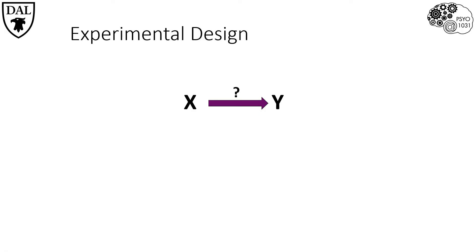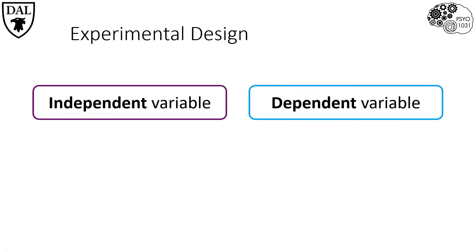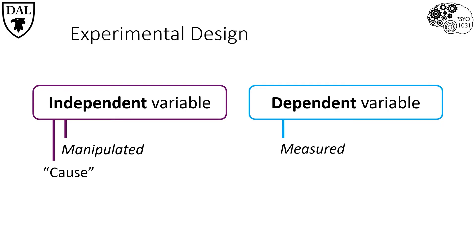An experimental research design has two types of variables: an independent variable and a dependent variable. The independent variable is the one that's manipulated, and is the proposed cause in the research question. Going back to the example of whether sugar causes hyperactivity in children, this would be sugar. The dependent variable is the one that's measured, and it's the proposed effect in the research question. Back to our question on whether sugar causes hyperactivity in children, this would be activity levels. Although an experiment can have many independent and dependent variables, the most basic experimental design has to have at least one independent variable and one dependent variable.